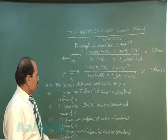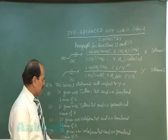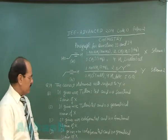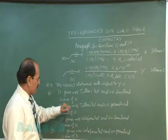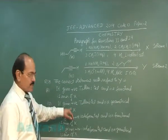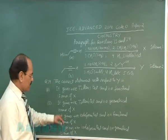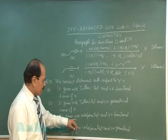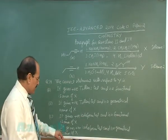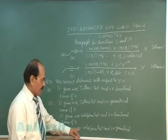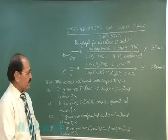Question 34 asks for the correct statement with respect to Y. Four options are given: it gives positive Tollens test and is a functional isomer of X; it gives positive Tollens test and is a geometrical isomer of X; it gives positive iodoform test and is a functional isomer of X; and it gives positive iodoform test and is a geometrical isomer of X.